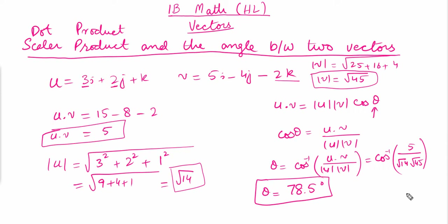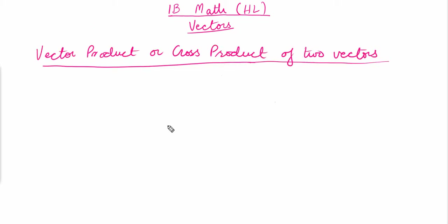After the scalar or dot product, we look at the vector product or cross product of two vectors. We'll consider the same vectors and work out their cross product.